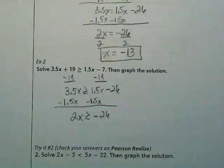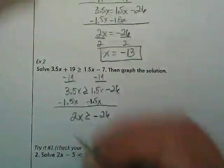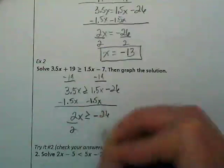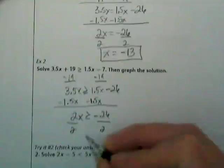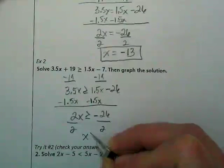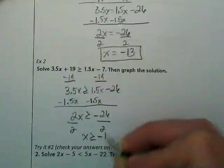Why not? It's not that the answer is negative that makes it flippable. It's what we're dividing by. What are we dividing by here? Positive 2. Positive 2, so the symbol stays the same. And we end up with x is greater than or equal to negative 13.